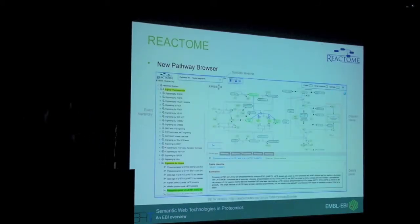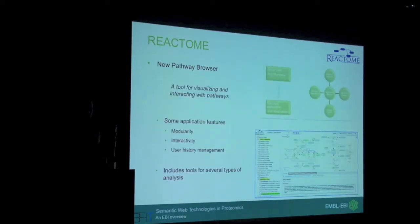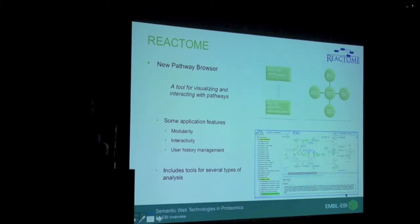Now about Reactome — this is the new pathway browser. Some of you may have used the Reactome browser in the past. The look is quite the same as before, but the implementation underneath is completely new. It's basically in GWT using an MVP pattern. The idea is to have something modular where we can plug in more information, and this is the basis of the new Pathway Portal. Data from different resources is going to be shown in a details panel, trying to show relationships between the different resources.